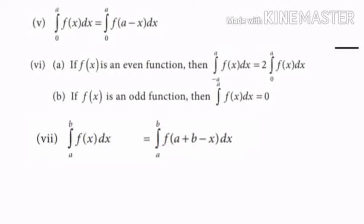The seventh property is that the integral from a to b of f(x) dx is equal to the integral from a to b of f(a plus b minus x) dx.